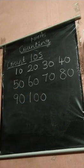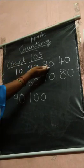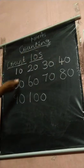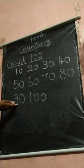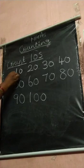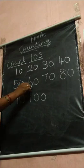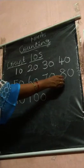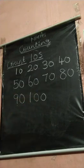Say children, ten's count: ten, twenty, thirty, forty, fifty, sixty, seventy, eighty, ninety, hundred. Once again say: ten, twenty, thirty, forty, fifty, sixty, seventy, eighty, ninety, hundred. All of them understood, children. Two's count, five count, and ten's count. Good children, thank you children.